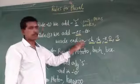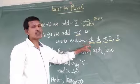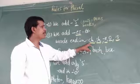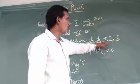In these nouns which end with such letters ch, sh, x, o, s, we add 'es' to make them plural.